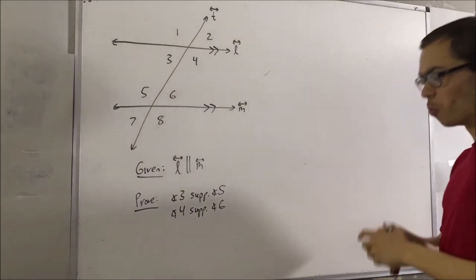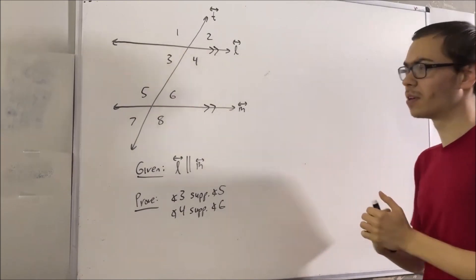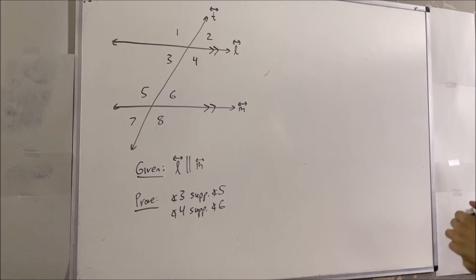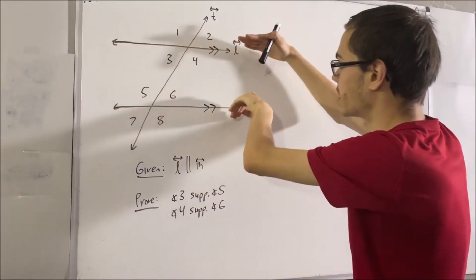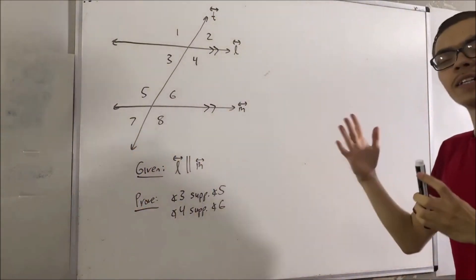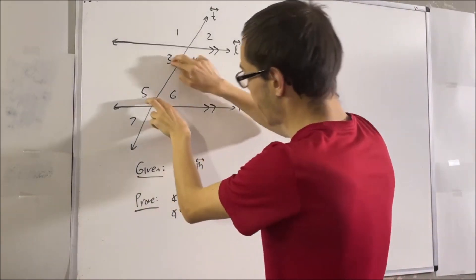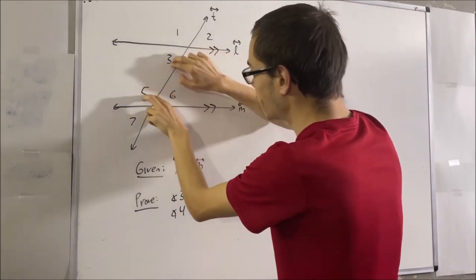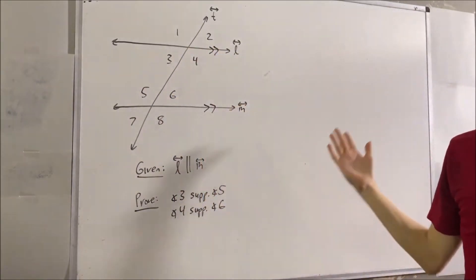In this video, we're going to talk about the same-side interior angles theorem. What are same-side interior angles? In this setup, we have two lines cut by a transversal. The same-side interior angles would be pairs of angles that include angle 3 and angle 5, and angle 4 and angle 6. These two pairs are what we call pairs of same-side interior angles.